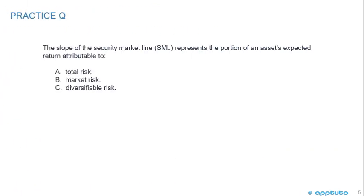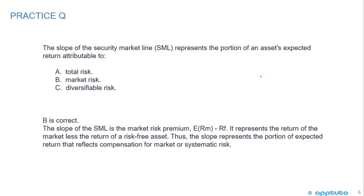Practice question: The slope of the security market line represents the portion of an asset's expected return attributable to A) total risk, B) market risk, or C) diversifiable risk. The correct answer is B. The slope of the security market line is the market risk premium — the expected return of the market minus the risk-free rate. It represents the return of the market less the return of the risk-free asset, so the slope represents compensation for market or systematic risk.